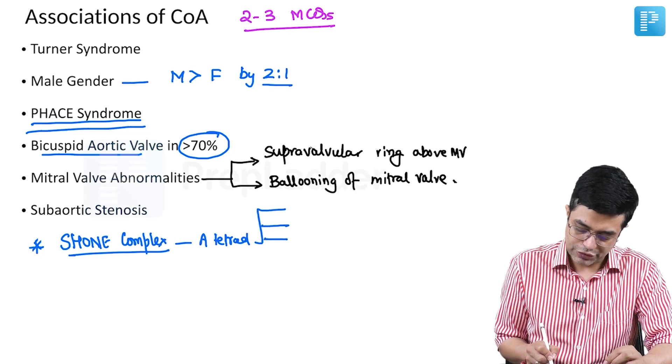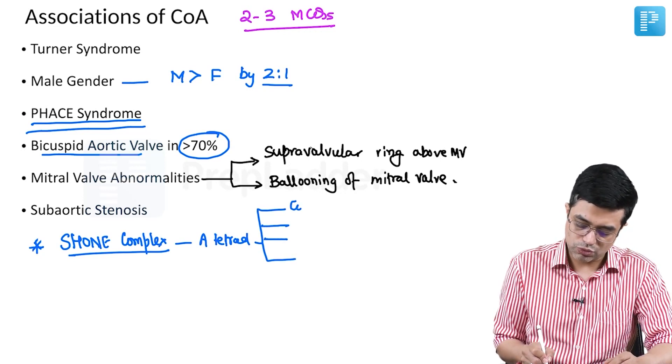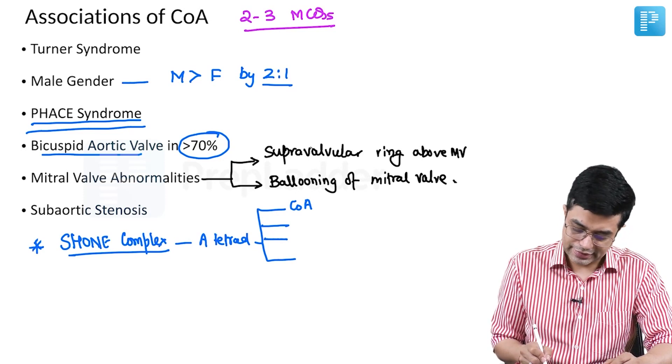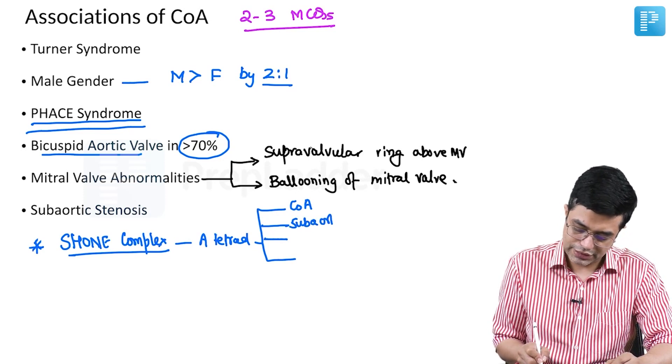So if four things happen, we call it as Shone complex. First is coarctation of aorta. Second is subvalvular or subaortic stenosis.